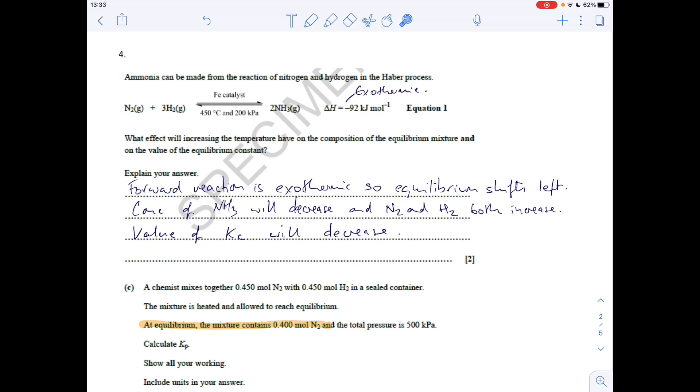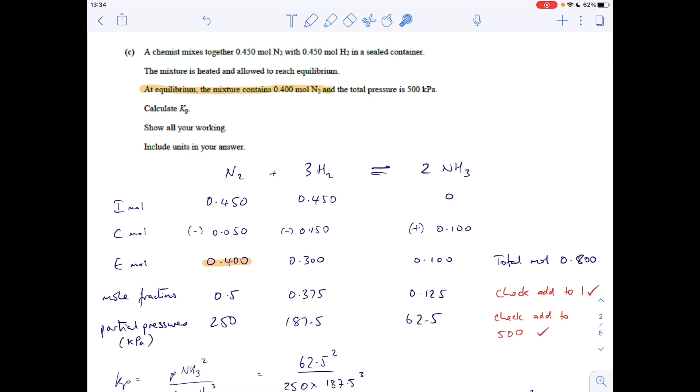Question four: we've got the Haber process equilibrium with negative ΔH, so the forward reaction is exothermic. We're asked what effect increasing temperature will have on the composition of the equilibrium mixture and the equilibrium constant. Because the forward reaction is exothermic, this equilibrium will go backwards - it favors the endothermic reaction. The composition will shift backwards, so ammonia will decrease and nitrogen and hydrogen will increase. Therefore Kc will decrease.